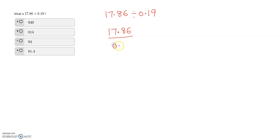We have 0.19 in the denominator. We need to remove the decimal. For the number in the numerator, if I remove the decimal I write 100 in the denominator because there are two digits after the decimal. If I remove the decimal from the denominator number, I write 100 in the numerator — we always write on the opposite position.